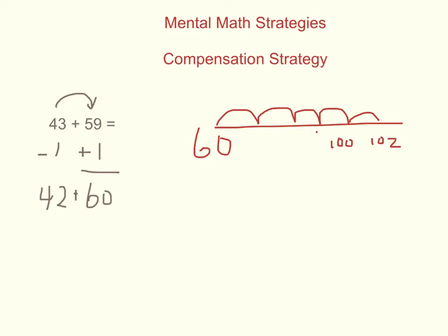Or we can use the front end strategy where we add our tens digits and our ones digits separately. Starting with our friendly number of 60, breaking apart 42 in its expanded form, we have 60 plus 40 equals 100, and adding the 2, 100 plus 2 equals 102.